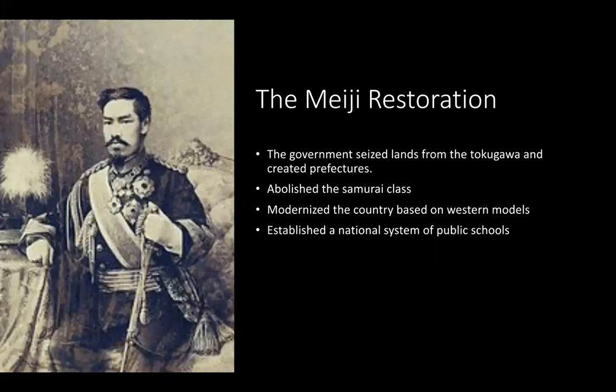Once he gained more control, Mutsuhito began the Meiji Restoration. The government seized lands, and instead of the daimyos being in control, prefectures were created. The samurai class was abolished and the shogun had lost all power — it was now only the parliament and the emperor. The country became more modernized and Westernized. They created public schools and systems of bureaucracy similar to the Western model, and also adopted Western styles of dress, as we can see in the picture of a more mature Meiji emperor dressed in a militarized uniform, a very Western influence.